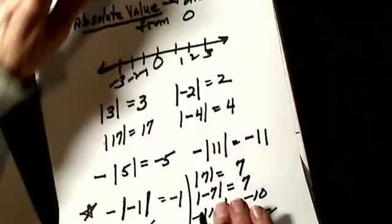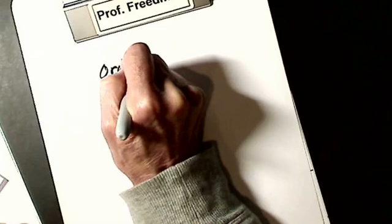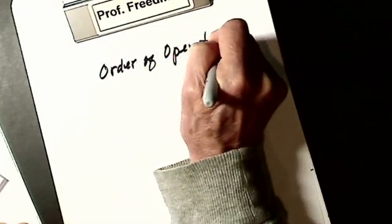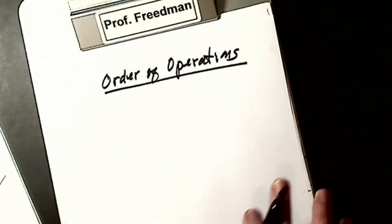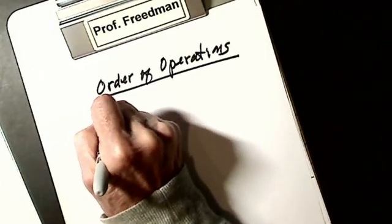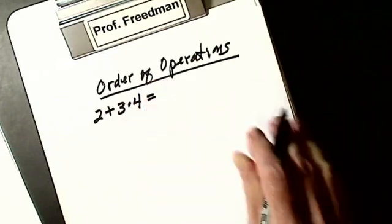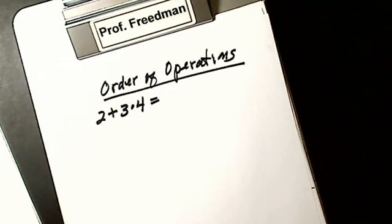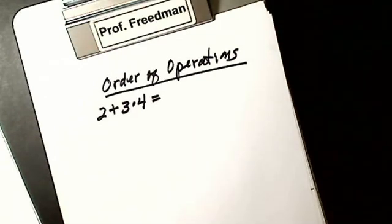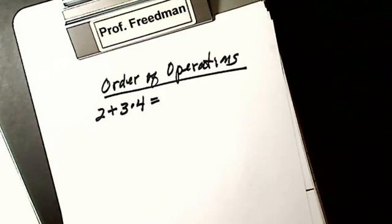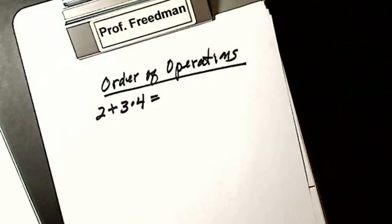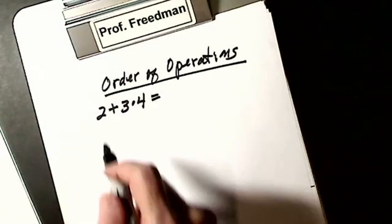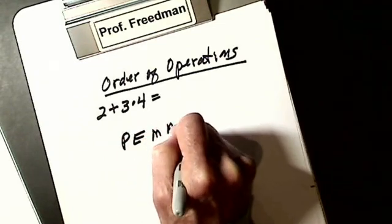Then we have one more topic for the first lesson, and it's a big one — order of operations. You have to be really good with this because it's going to come up through the whole course. In math there's a special order of operations. For example, 2 + 3 × 4: the answer is 14, not 20. The easy way to remember the order is 'Please Excuse My Dear Aunt Sally' — PEMDAS.